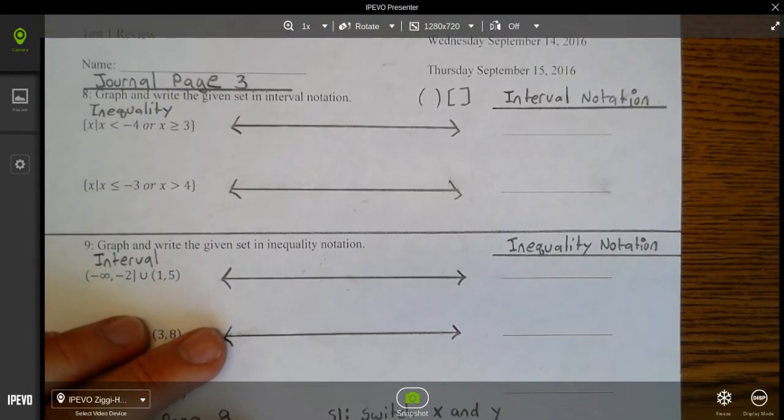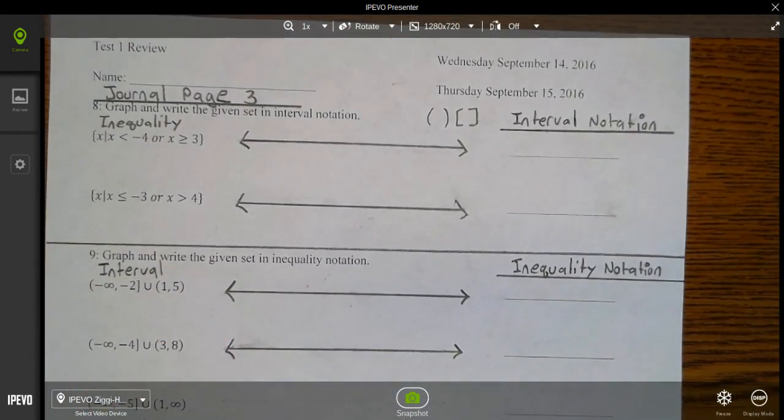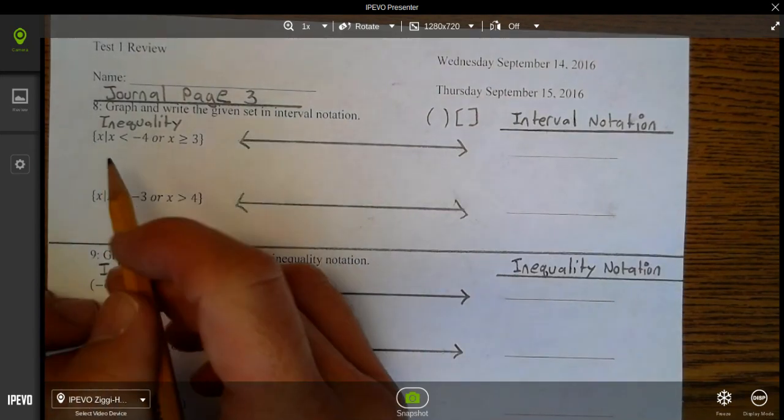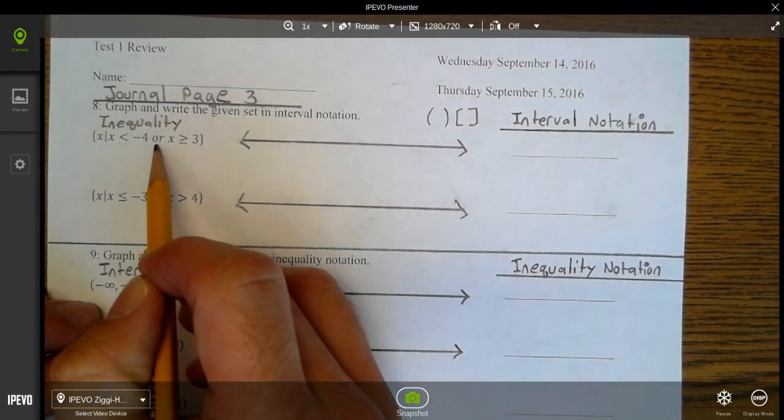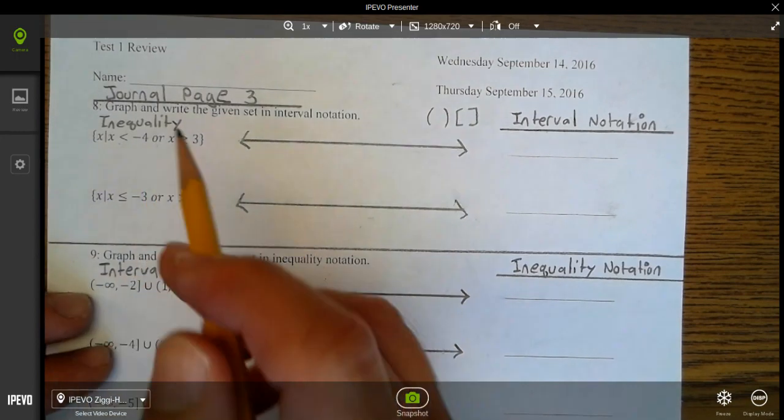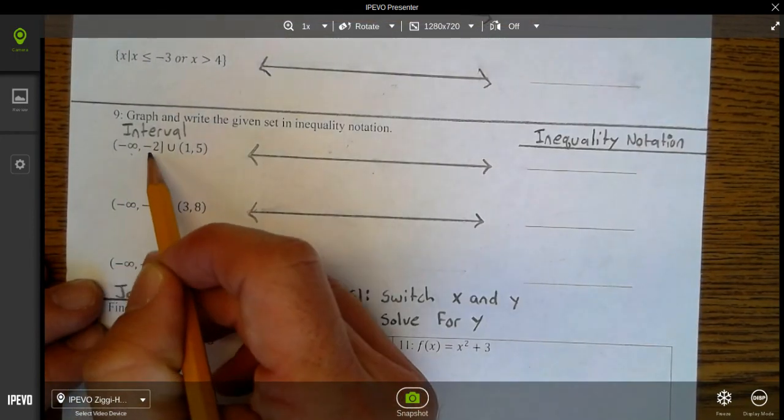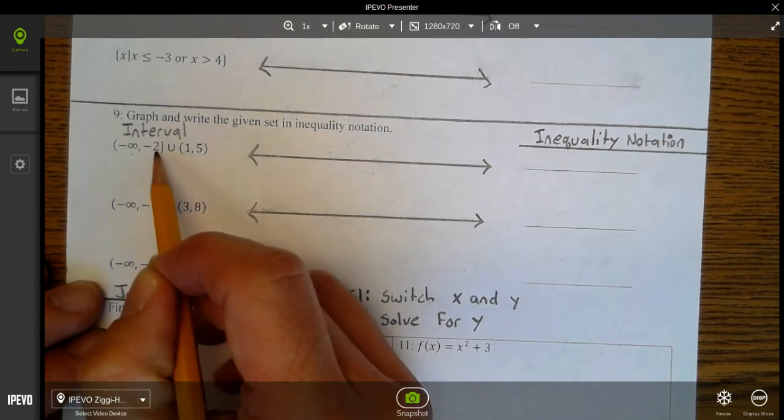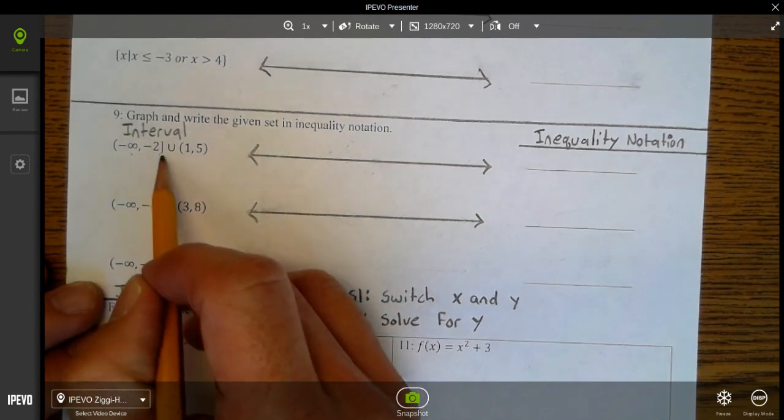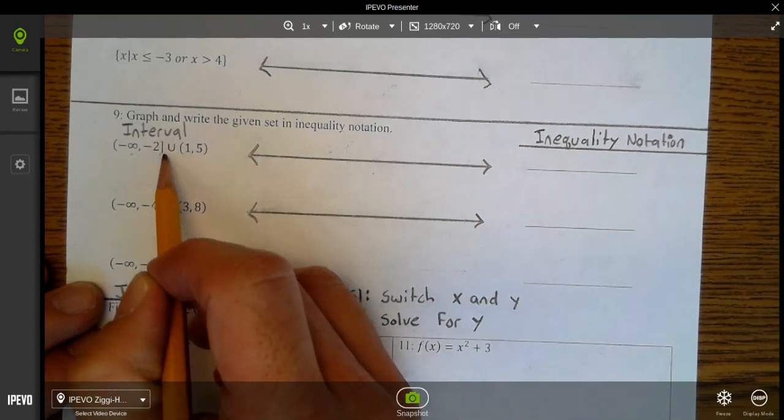Please do not mix up—that was the biggest mistake on the quiz—you mixed inequality and interval notation. Notice in inequality it has inequalities and the word 'or' sometimes. Interval notation has parentheses and brackets. The key here is interval has parentheses and brackets; inequality notation does not.